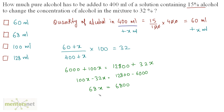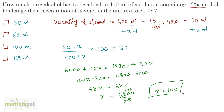So, x = 6800 / 68. This simplifies — 6800 divided by 68 = 100. Therefore, x = 100. We must add 100 ml of alcohol to this solution in order to make the concentration 32% alcohol.